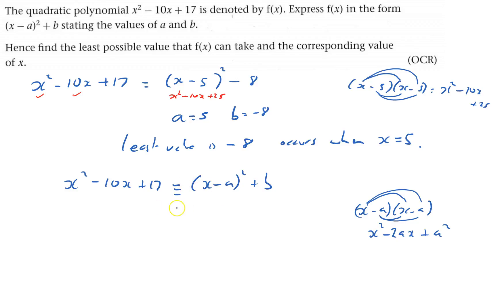So it's always equal to x squared minus 2ax plus a squared plus b, and that is x squared minus 10x plus 17.